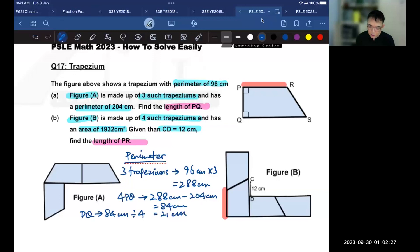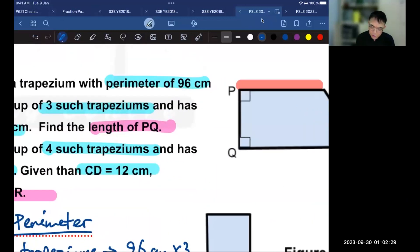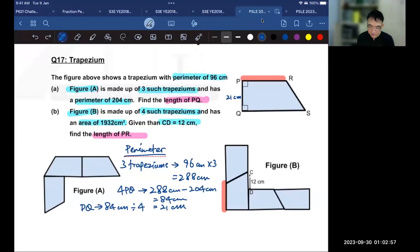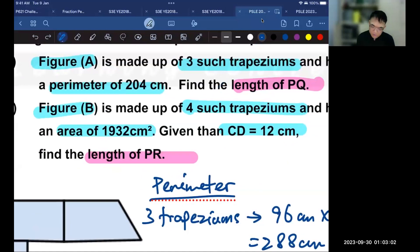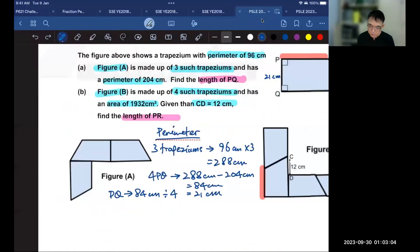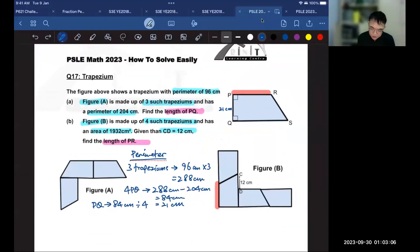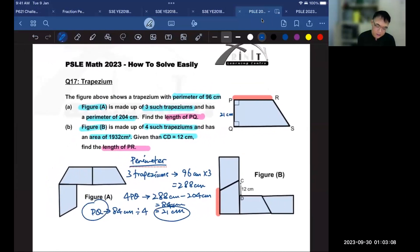So now that I know it's 21, a good habit is to put it back in the diagram. So this is 21. I have solved the first question, the length of PQ. So the length of PQ is 21. That's the answer for part A.